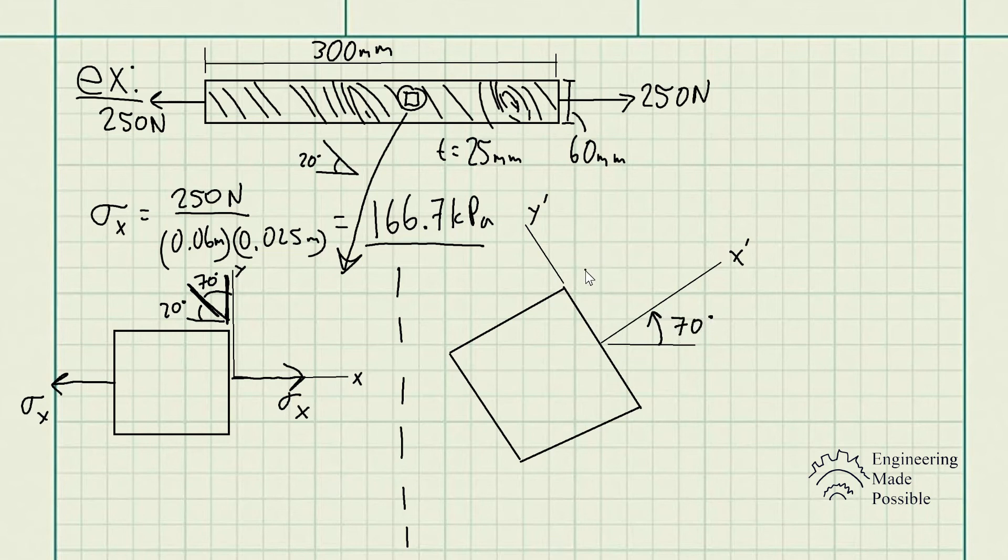We can see that we rotated it 70 degrees to align with the wood grain. This is the value for theta here. Now we're going to be solving for the normal stresses, sigma x prime, as well as the shear stresses, tau x prime y prime.